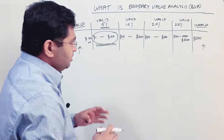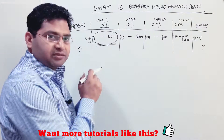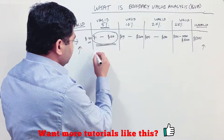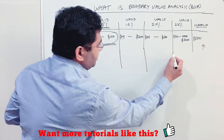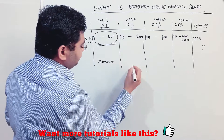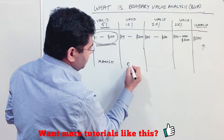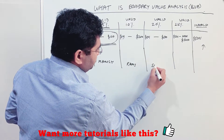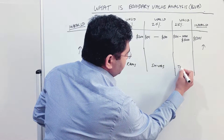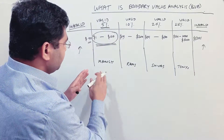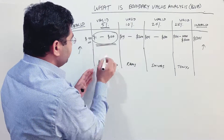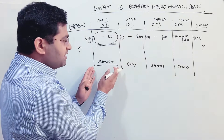As part of equivalence partitioning we have already defined the partitions — like plots of land. Say this is my plot, this is Manish's plot, this is Ram's plot, this is Shiva's plot, and this is Tony's plot.